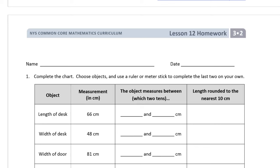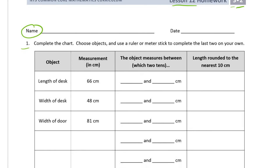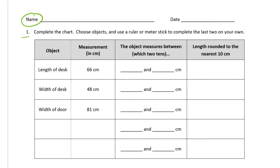Welcome to the homework for lesson 12, this is grade 3 module 2. Write your name here first. For our first question, we have to complete this chart. Choose objects and use a ruler or meter stick to complete the last two on your own.